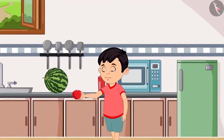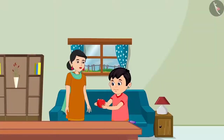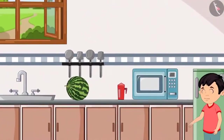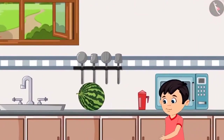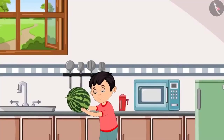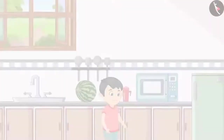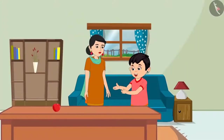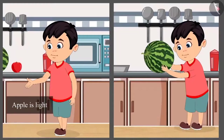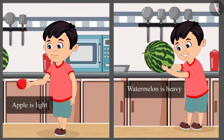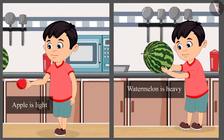Chotu picks up the apple from the kitchen and brings it out. He says, 'Take this apple, Mummy. Now I will bring watermelon.' Chotu goes to the kitchen but he is not able to lift the watermelon. He tells his mother, 'I am not able to lift the watermelon.' His mother explains, 'The apple is lighter than the watermelon, so you picked it up. But the watermelon is heavier than the apple, that's why you couldn't pick it.'